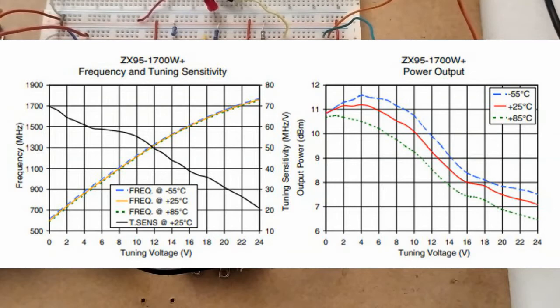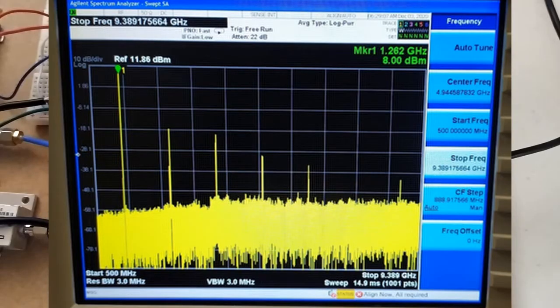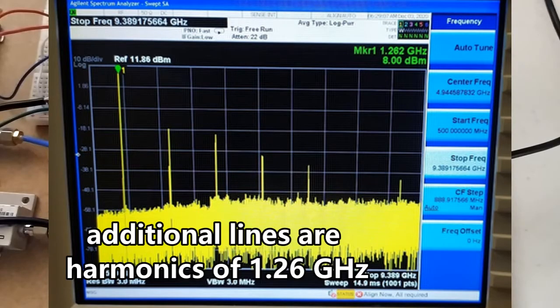On the other performance sheet we also see that at 12V we're getting a little bit over 9dBm power output. But when I tested this VCO with a spectrum analyzer, we see that the output frequency is actually more around 1.26GHz with a power output of 8dBm.